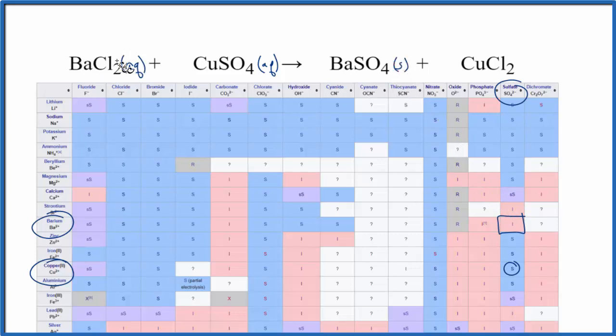So when barium chloride and copper sulfate react, we have this precipitate here. It falls to the bottom of the test tube. It's a solid. And in chlorides, we said, very soluble. So we have our states.